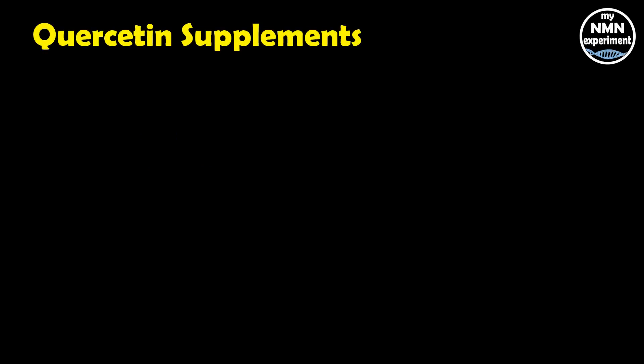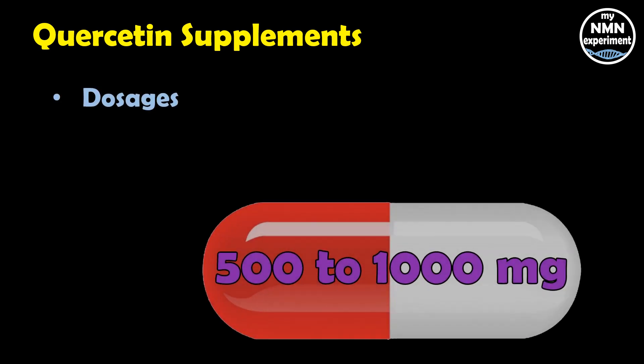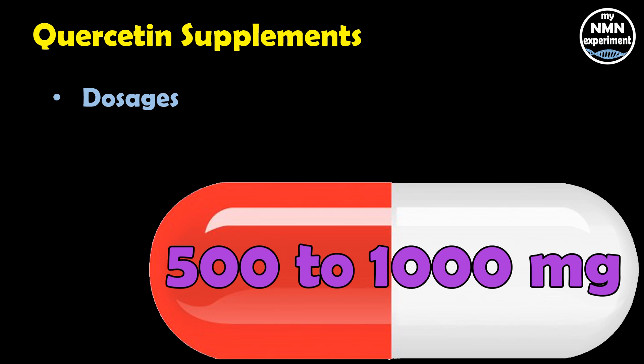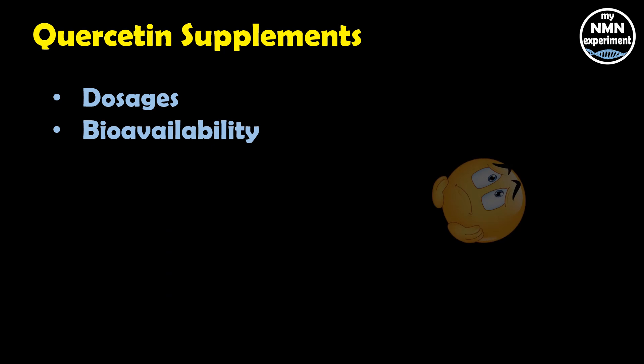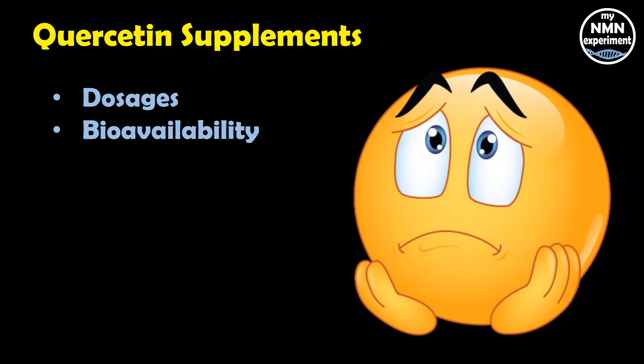You can purchase quercetin as a dietary supplement — DoNotAge.org carries it in capsule form. Typical dosages range from 500 to 1,000 milligrams per day. Unfortunately, on its own quercetin has low bioavailability, which means our bodies absorb it poorly, which is why some supplements may include other compounds such as vitamin C or a digestive enzyme to increase absorption.